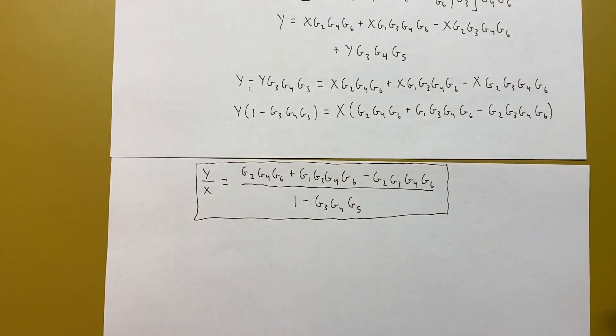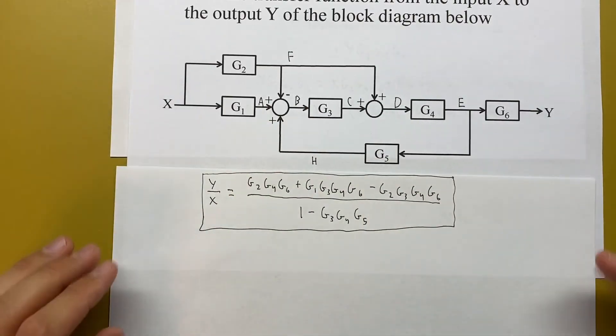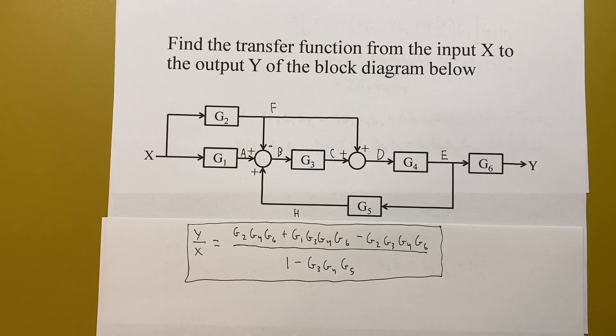Looking back at the original problem, all of this mess can just be replaced with one block that's this transfer function. Like I said earlier, I solved this problem already once using block diagram reduction, and I got the same answer, so that's good. I'll link that video down below.